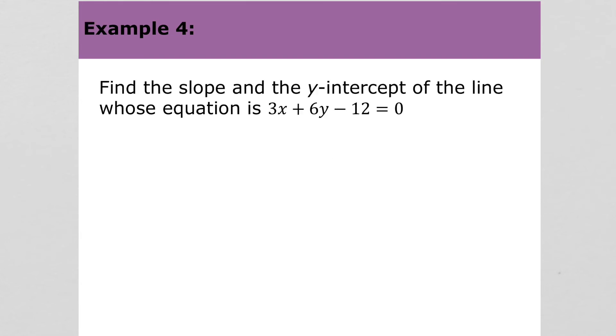For example 4, it says find the slope and y-intercept of this line whose equation is in general form: 3x plus 6y minus 12 equals 0. So we'll just solve for y. We've got 3x plus 6y, add 12 to both sides, subtract 3x from both sides, and divide by 6. Go ahead and simplify this. Negative 3/6 needs to be simplified to be negative one-half x plus 2. So what's the slope? Negative one-half. The y-intercept is 2, or the point (0, 2).